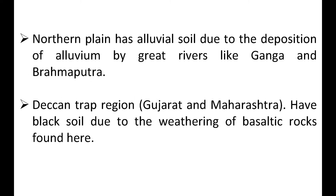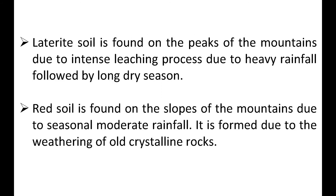The Northern Plain has alluvial soil due to the deposition of alluvium by great rivers like the Ganga and Brahmaputra. The Deccan Trap region, Gujarat, and Maharashtra have black soil due to the weathering of basaltic rocks. Laterite soil is found on the peaks of mountains due to intense leaching from heavy rainfall followed by a long dry season. Red soil is found on the slopes of mountains due to seasonal moderate rainfall, formed by the weathering of old crystalline rocks.